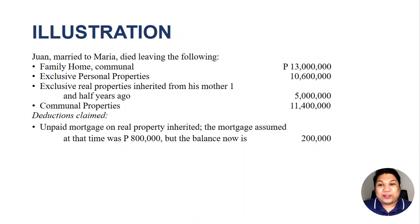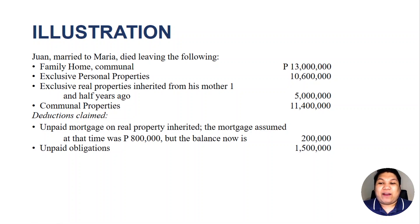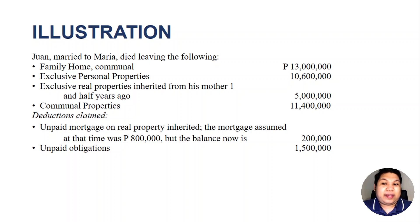We'll use that information in the computation of the vanishing deduction. Since this mortgage is related to a real property inherited, and we know that this inherited real property is exclusive, this mortgage will also be exclusive. We also have unpaid obligations of 1.5 million pesos, and we cannot trace whether these are communal or exclusive. Therefore, our general assumption is that these obligations were contracted for the benefit of the couple, and hence these unpaid obligations will be deducted from the communal properties.